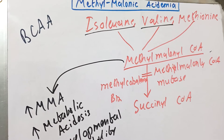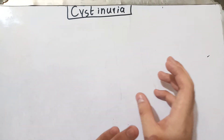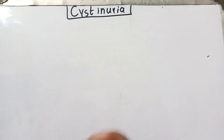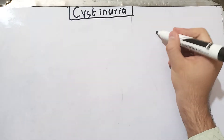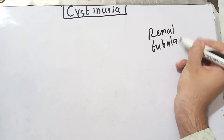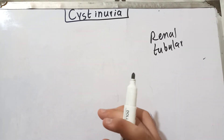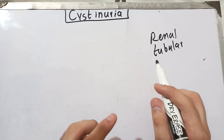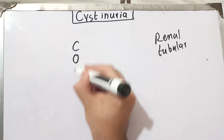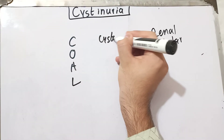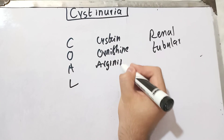Now let's talk about cystinuria. As the name indicates, cystinuria is a disease in which the amino acid cystine is present in urine. The renal tubular cells in the proximal tubule of the kidney absorb amino acids along with sodium by secondary active transport. The amino acids absorbed by a single or closely related transporter are: cysteine, ornithine, arginine, and lysine — remembered by the acronym COAL.